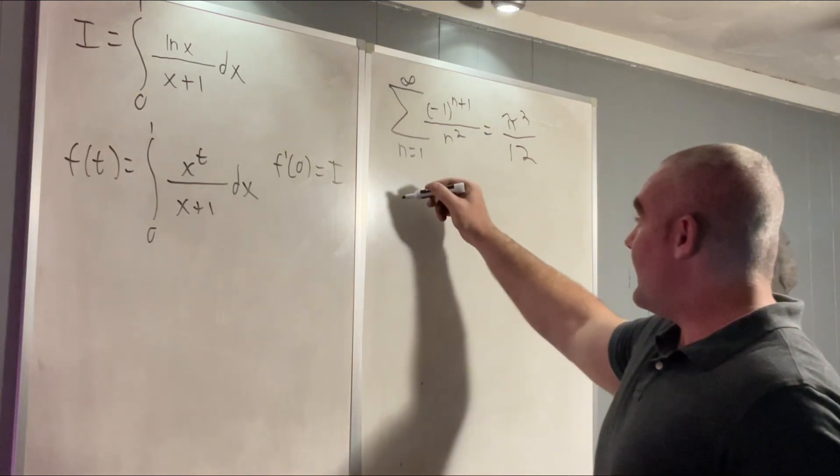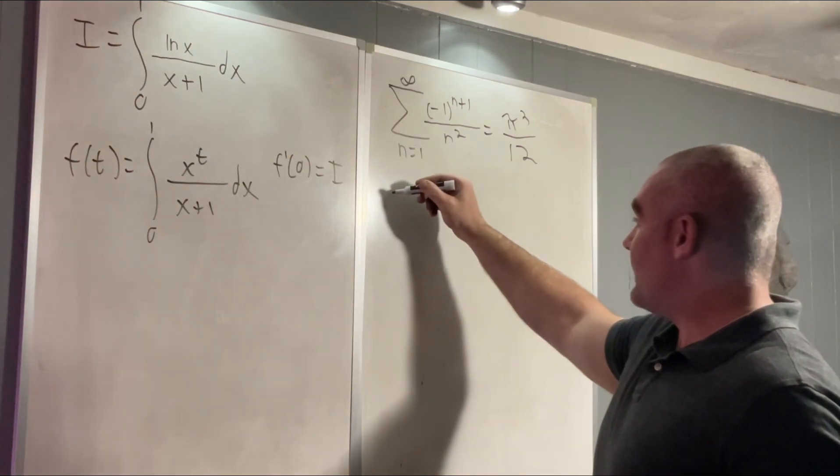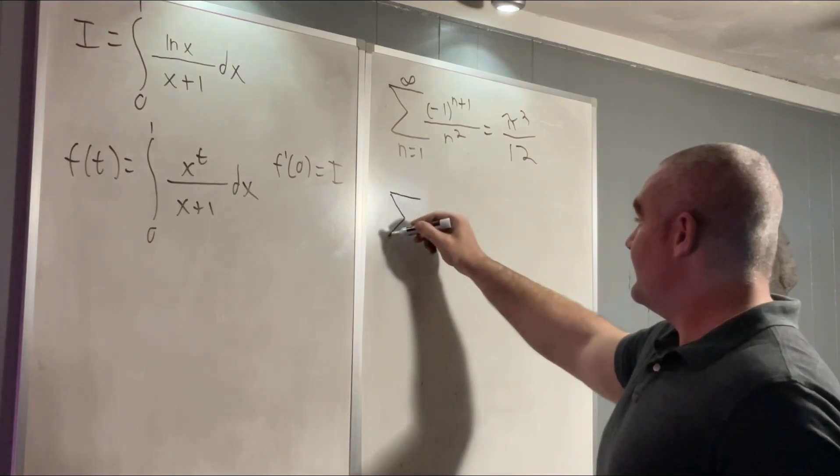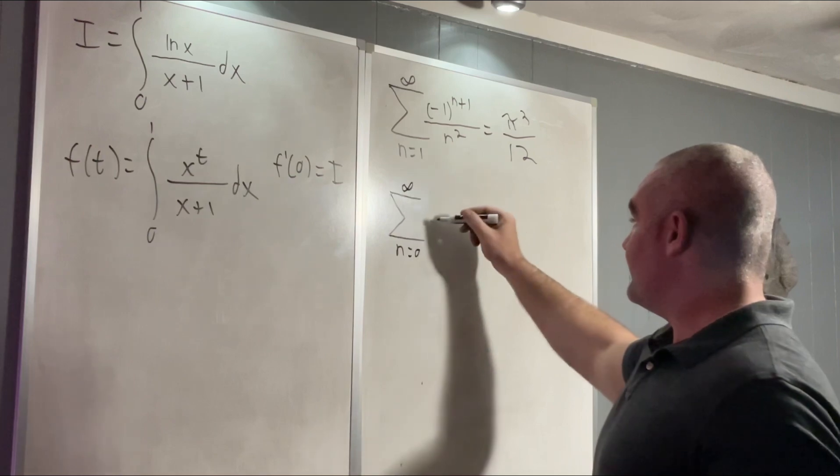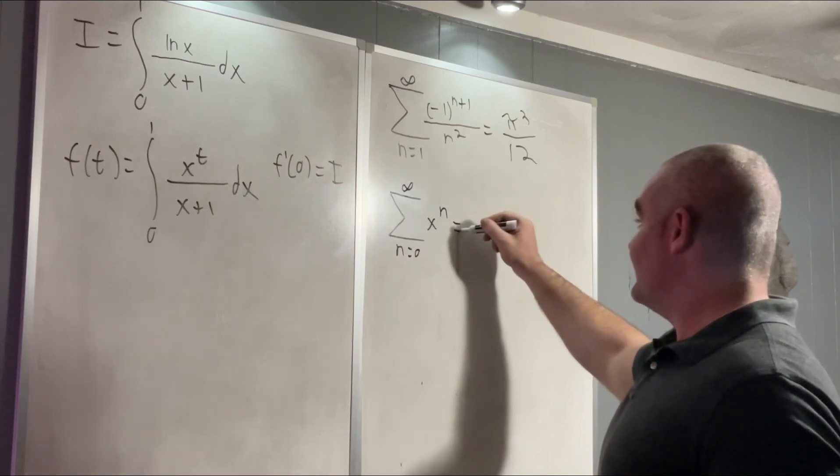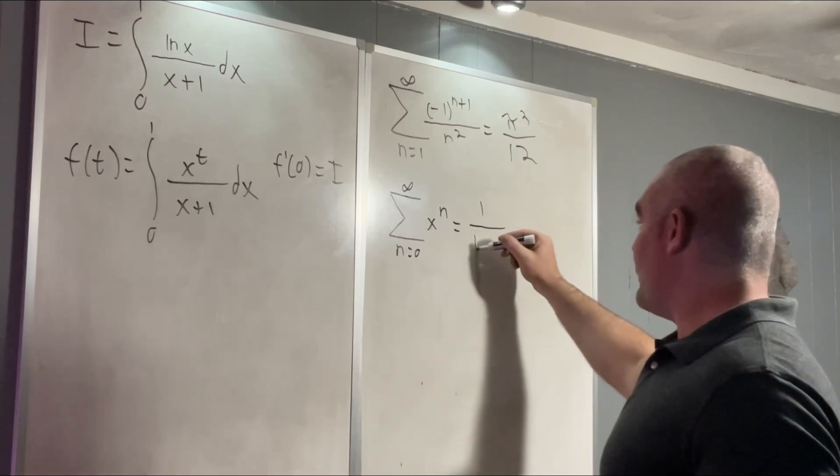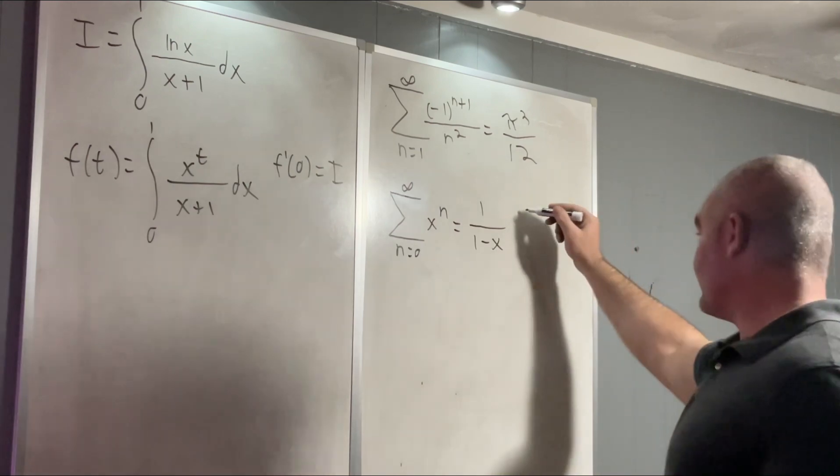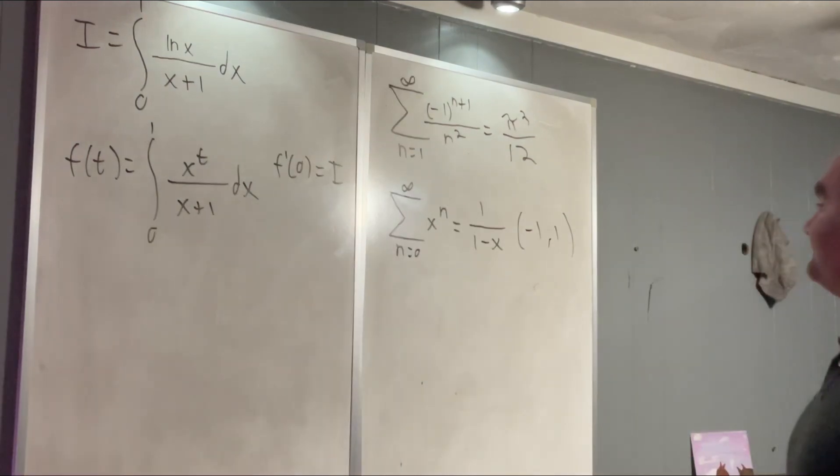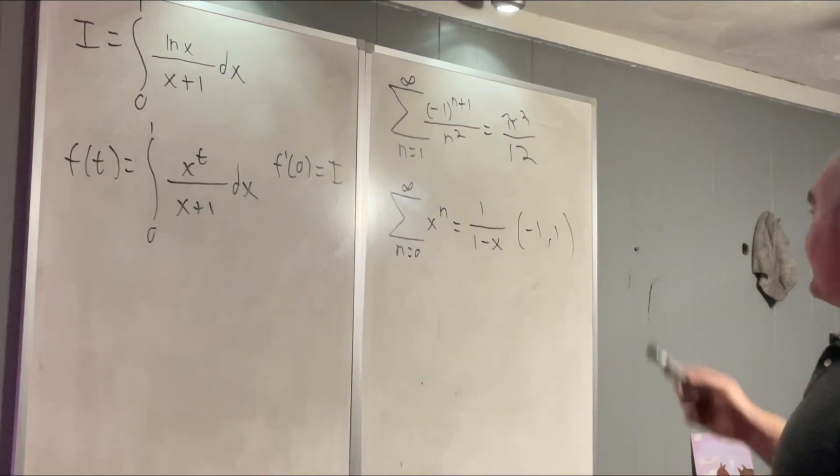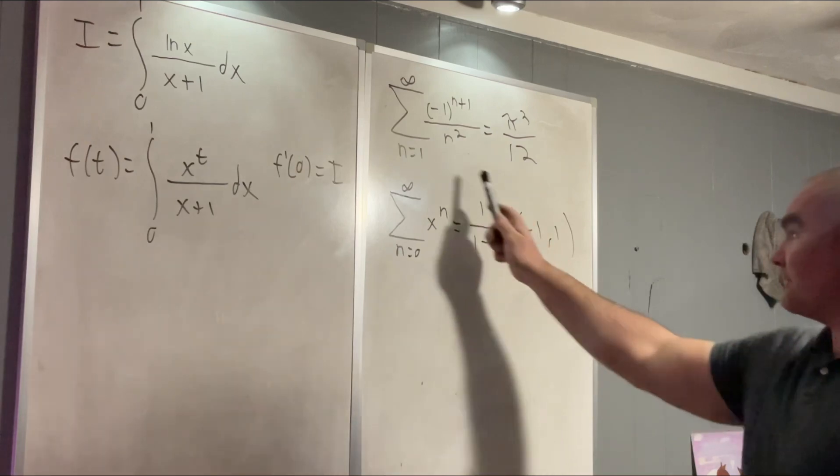We utilized this fact: that the sum from n equals 0 to infinity of x to the n is equal to 1 over 1 minus x on the interval negative 1 to 1. As long as your x value is between negative 1 and 1, these two statements are equivalent.